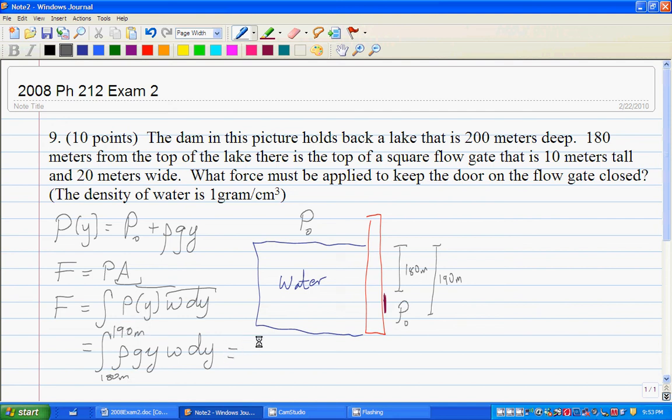When we do that, this turns into 1.5 rho g y squared. And the rho and g, of course, are constants. Times width. And we're integrating from 180 to 190 meters.